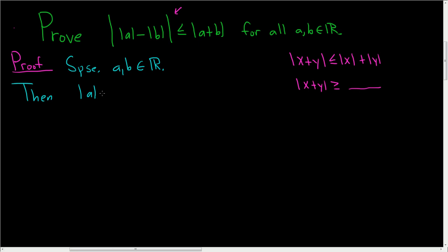So the absolute value of a — what we can do is add and subtract b, so this is a plus b minus b. This can be written as a plus b plus negative b. And now we will use the regular triangle inequality on these two terms.